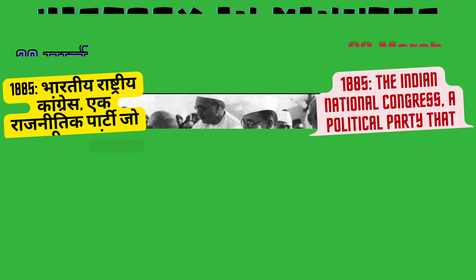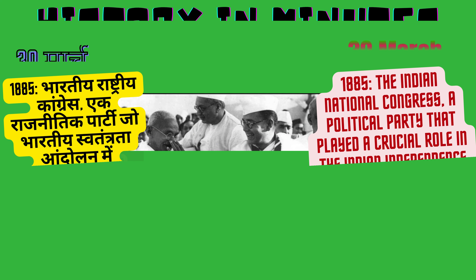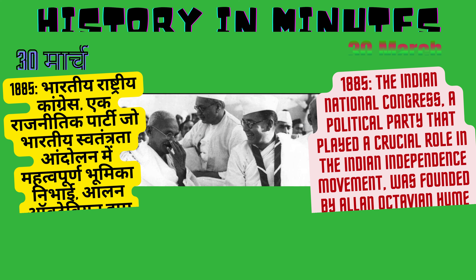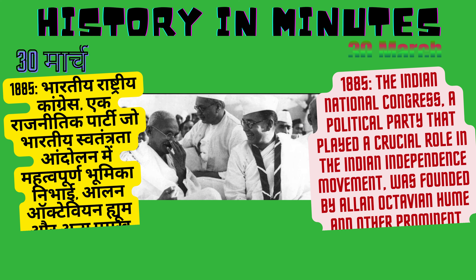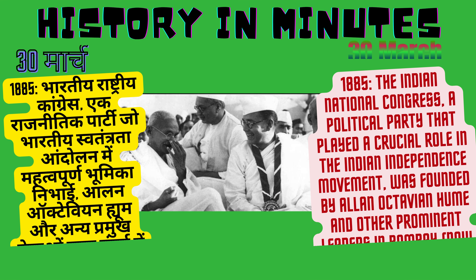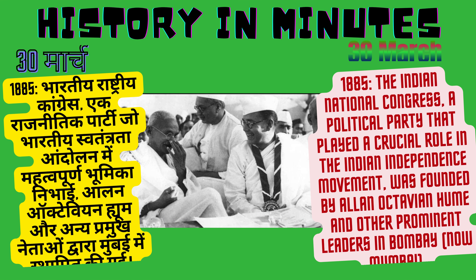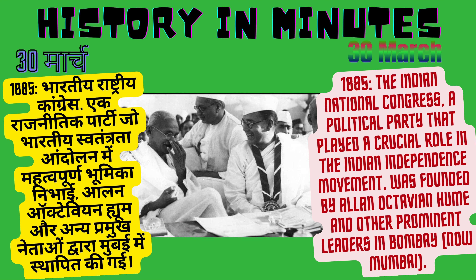1885: World — The Indian National Congress, a political party that played a crucial role in the Indian independence movement, was founded by Allan Octavian Hume and other prominent leaders in Bombay, now Mumbai. (Hindi: Bhartiya Rashtriya Congress, ek rajnitik party jo Bhartiya swatantrata andolan mein mahatvapurn bhumika nibhai, Alan Octavian Hume aur anya pramukh netaon dwara Mumbai mein sthapit ki gai.)